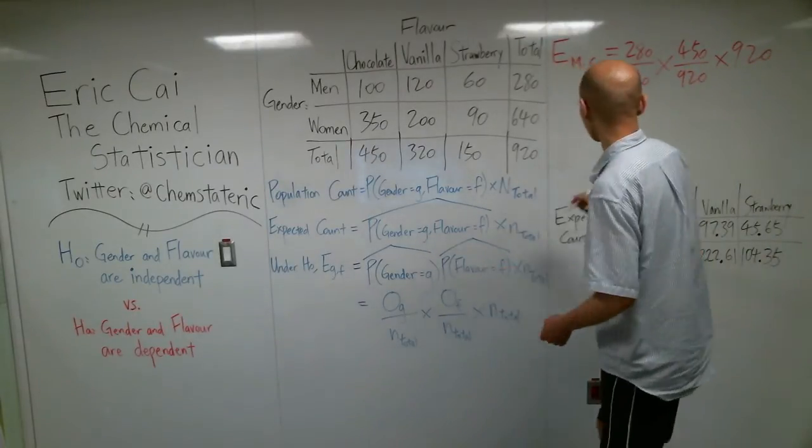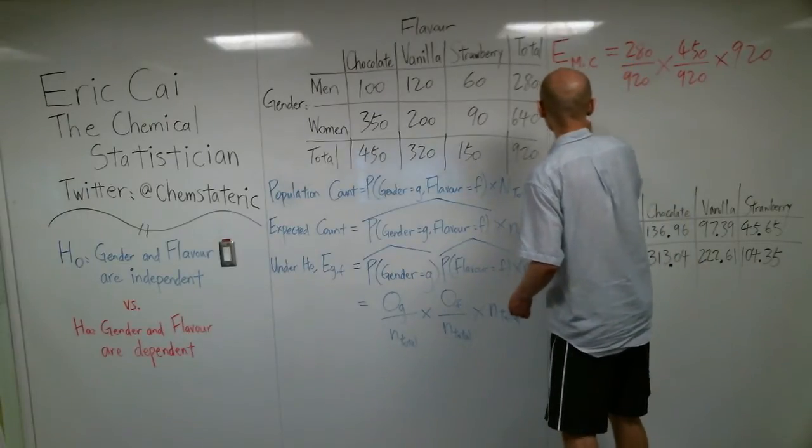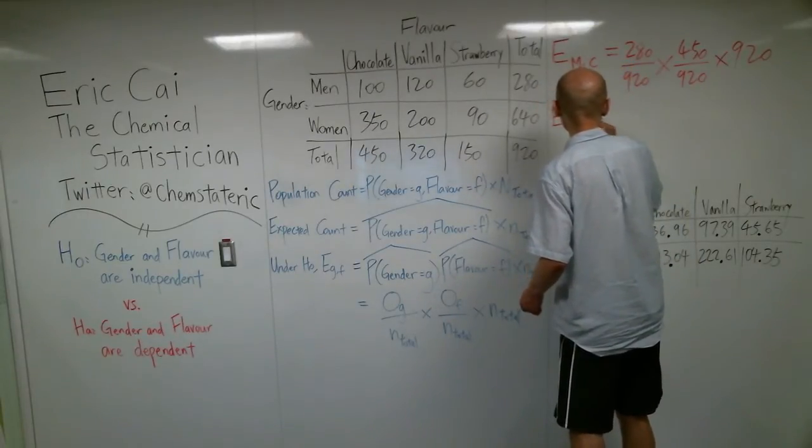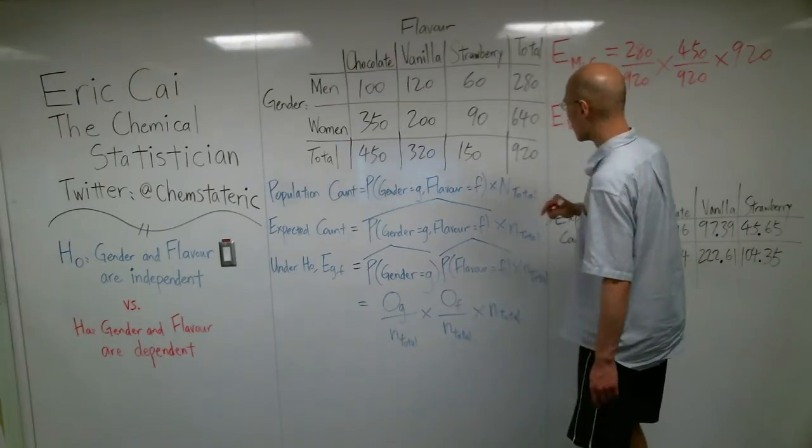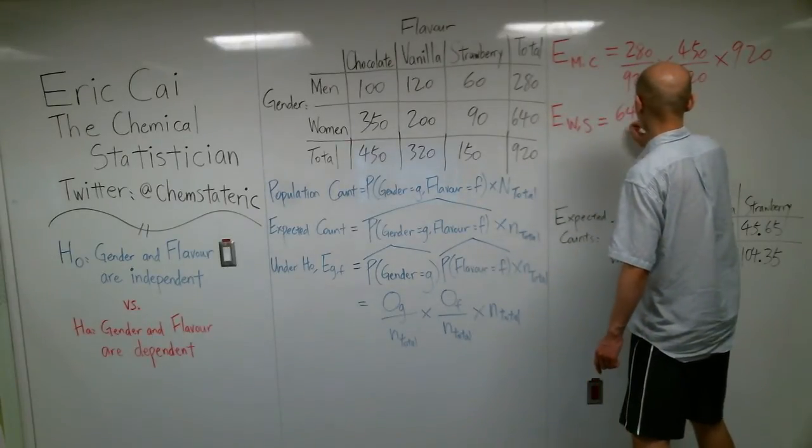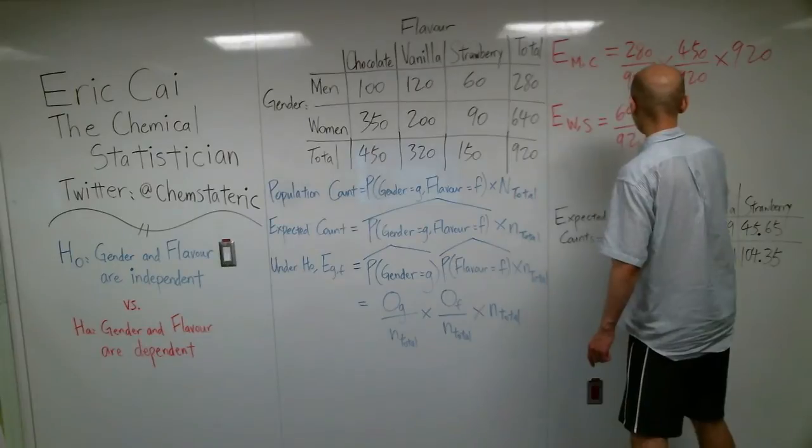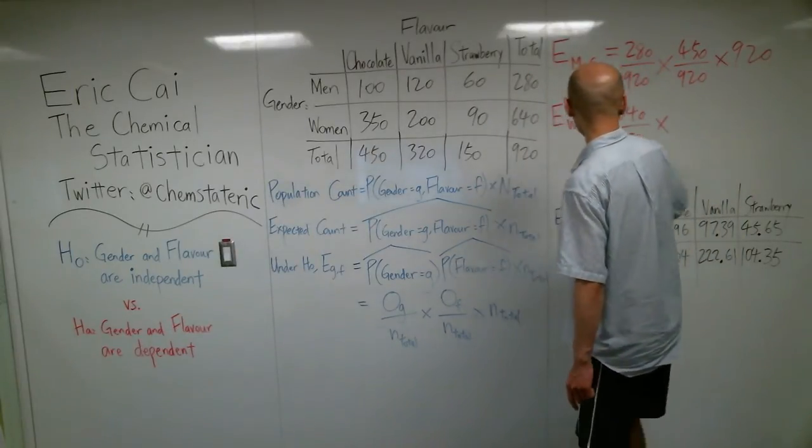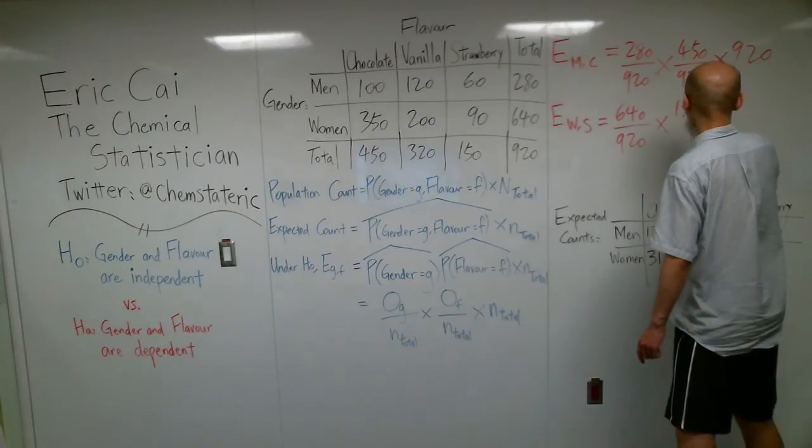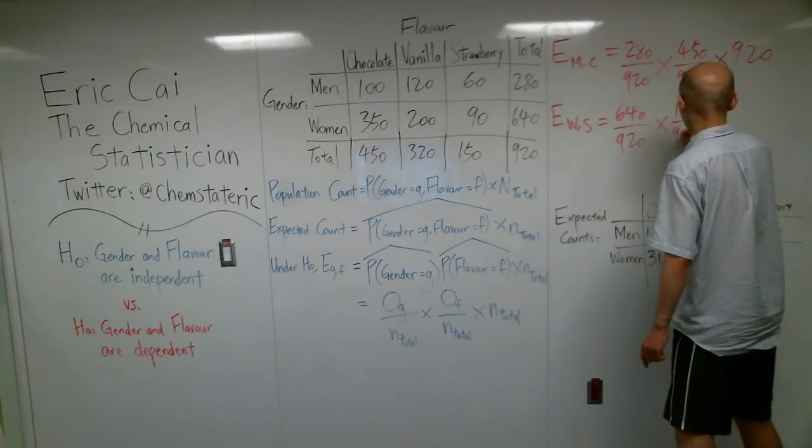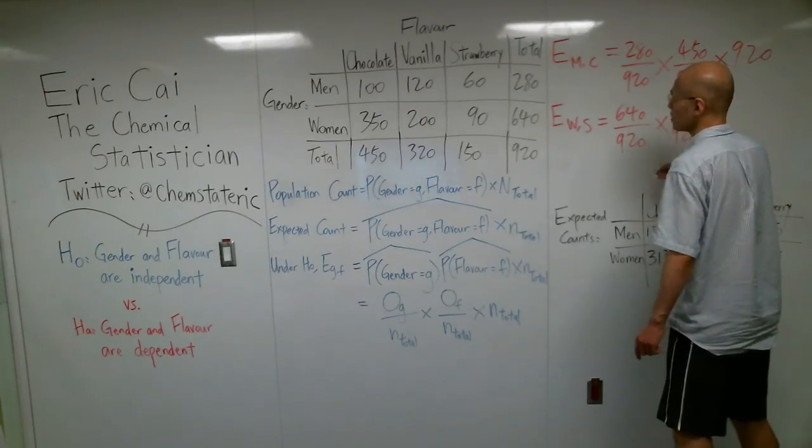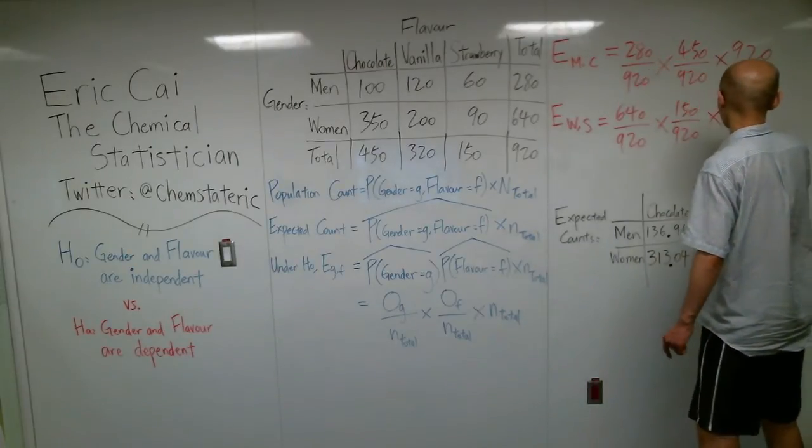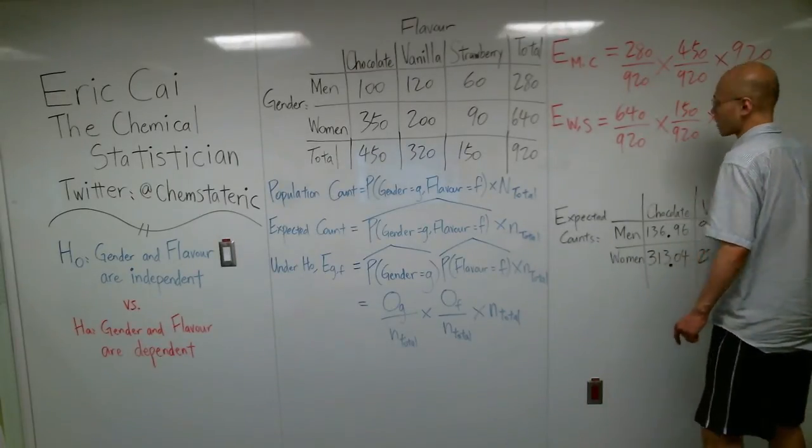Let's go through another example. Let's say we're interested in the expected count of women who prefer strawberry. That would be equal to 640 divided by 920, that's our observed proportion of women, times 150 divided by 920, that's our observed proportion of strawberry, times 920, our grand total.